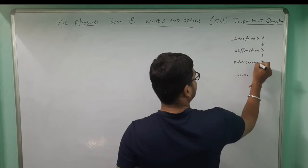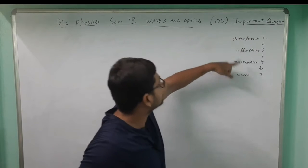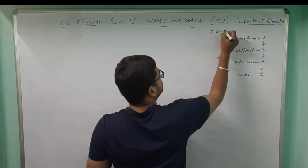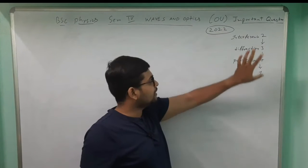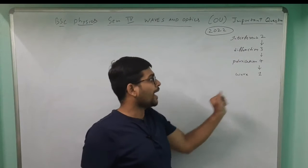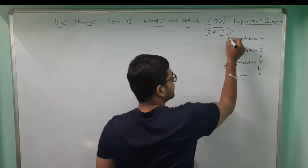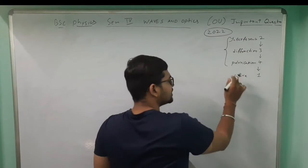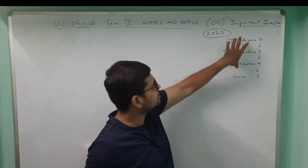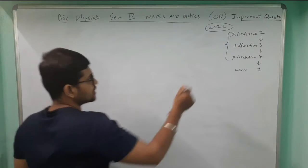I am giving unit names because questions in the exam paper mention unit names. For the year 2022, we will first discuss unit two, then three, then four, and then one. Why this order? Because Interference, Diffraction, and Polarization are a bit harder, so we tackle those first — leaving Waves for last since it is relatively easier.